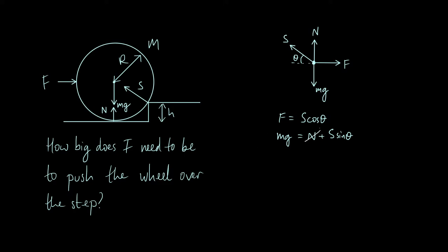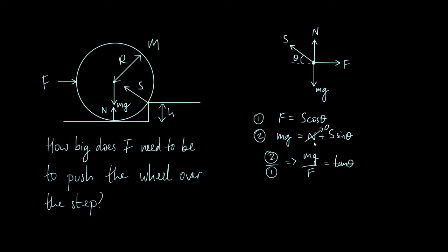So let's set our normal force to zero and try to solve for F. What we can do is divide the two equilibrium equations by each other, so that the S terms cancel. Labelling them equations 1 and 2, dividing equation 2 by equation 1, we get mg over F equals sine theta over cos theta, which is the same as tan θ. So all we have to do is find the tangent of theta, and then we can rearrange to get F.